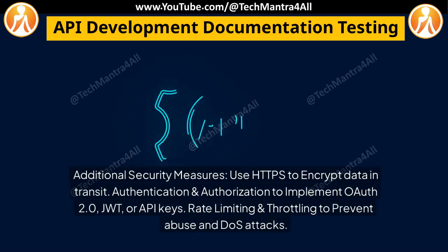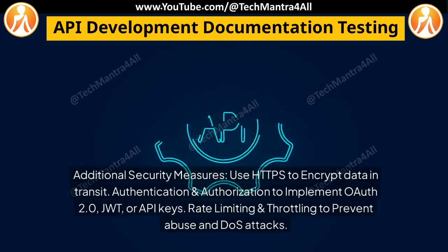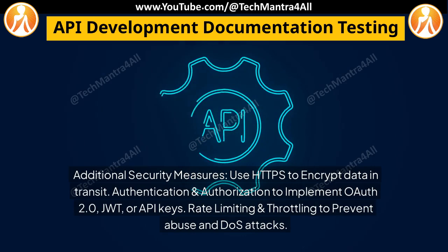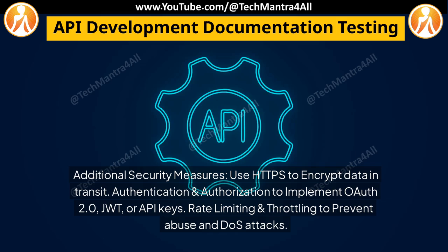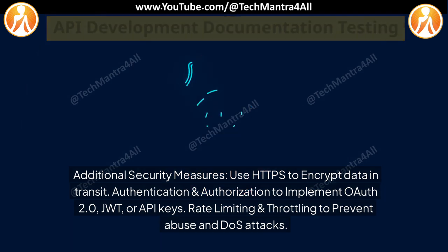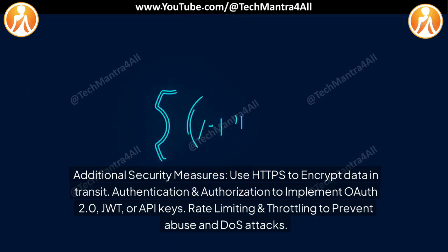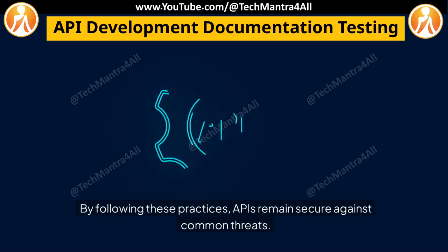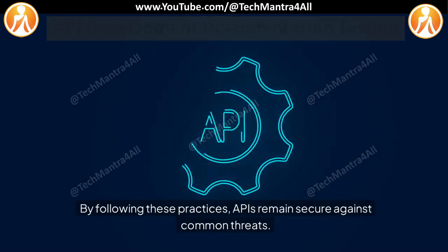Additional security measures include: use HTTPS to encrypt data in transit; implement authentication and authorization using OAuth 2.0, JWT, or API keys; and apply rate limiting and throttling to prevent abuse and DDoS attacks. By following these practices, APIs remain secure against common threats.